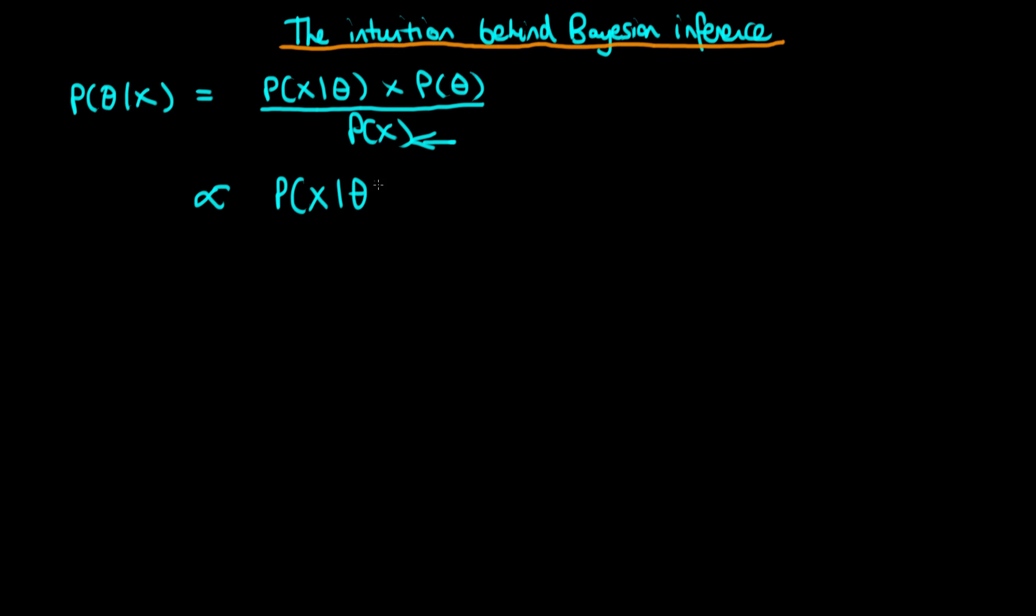So that's the likelihood p of x given theta times p of theta, the prior. And we see here that this is a kind of weighted geometric average here. And because of the geometric nature of the average, geometric here just meaning that I'm multiplying things together, that means that it is sensitive to small values of either of these two quantities. So we see that the posterior is a kind of weighted average of the likelihood and the prior.